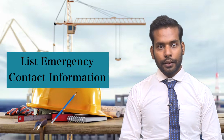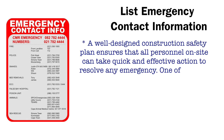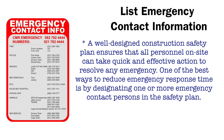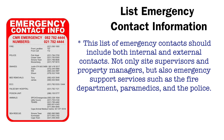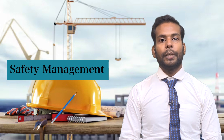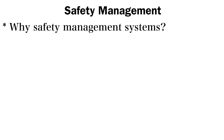The seventh point is to list emergency contact information. A well-designed construction safety plan ensures that all personnel on site can take quick and effective action to resolve any emergency. One of the best ways to reduce emergency response time is to designate one or more emergency contact persons in the safety plan. This list should include both internal and external contacts — not only site supervisors and property managers, but also emergency support services such as the fire department, paramedics, and police.